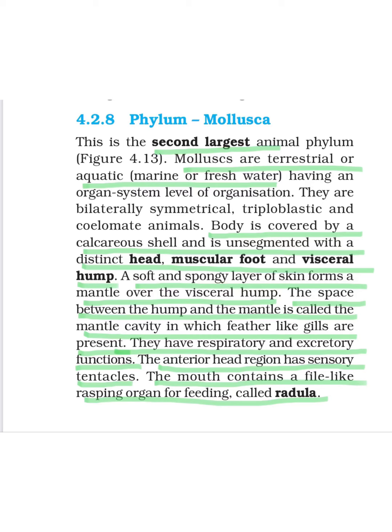Now the special features start. First, their body is covered by a calcareous shell, which is very hard. The body is unsegmented with a distinct head, muscular foot — a single foot is present — and a visceral hump. In Arthropoda we had head, thorax, and abdomen; here we have head, muscular foot, and visceral hump. The body is soft, and a spongy layer of skin forms a mantle over the visceral hump. The shell is present for protection.